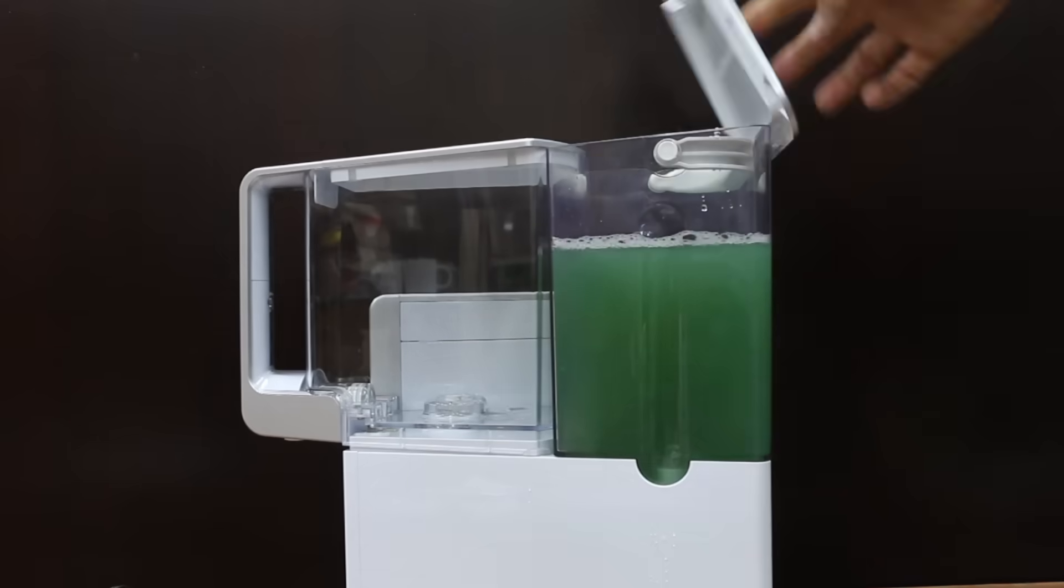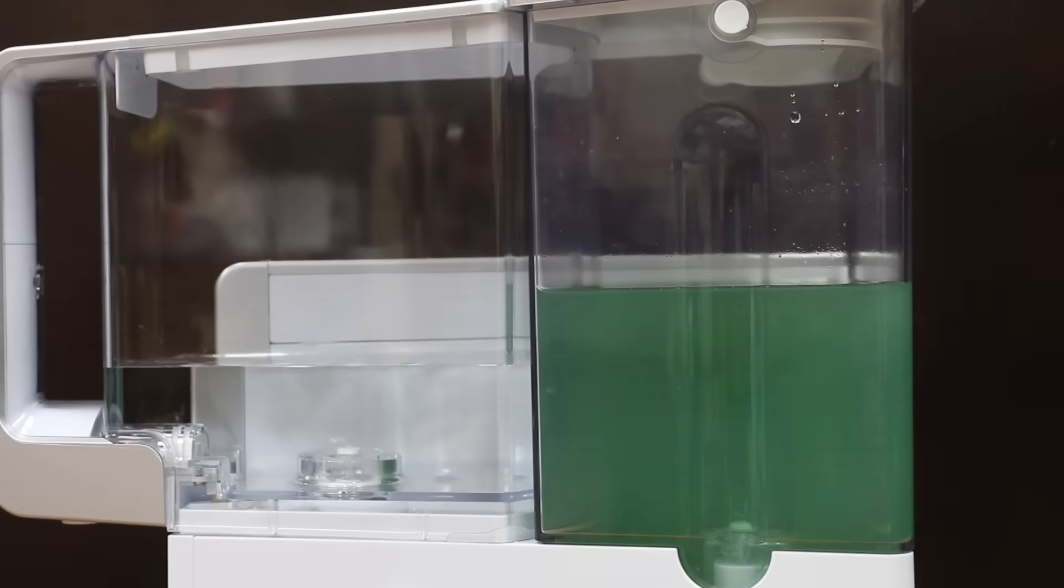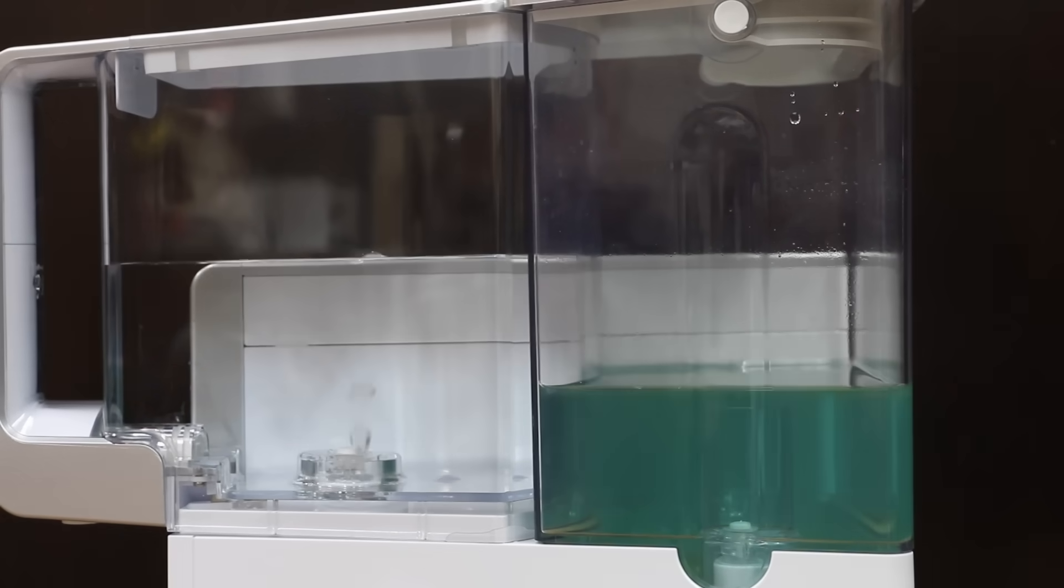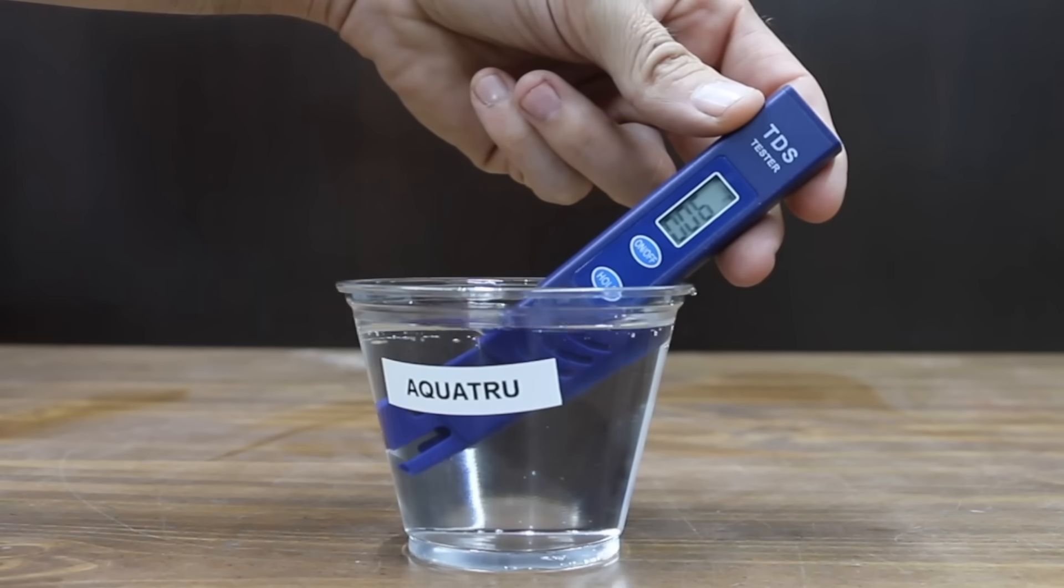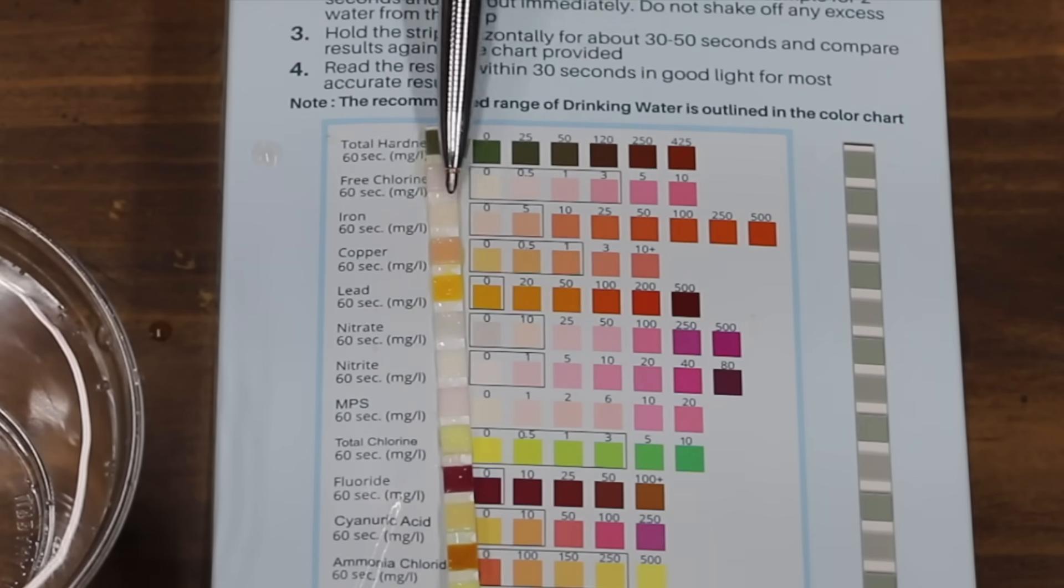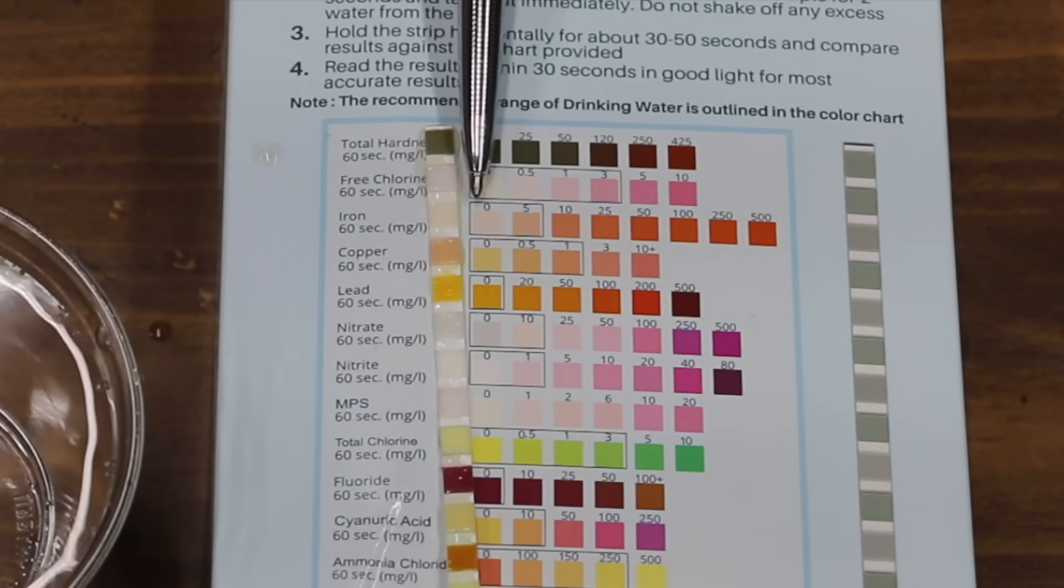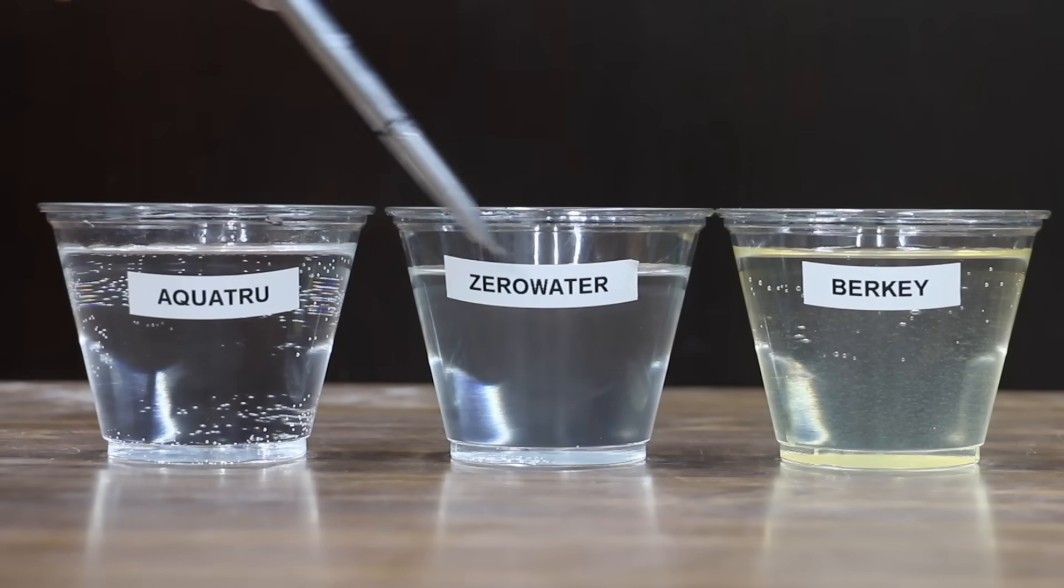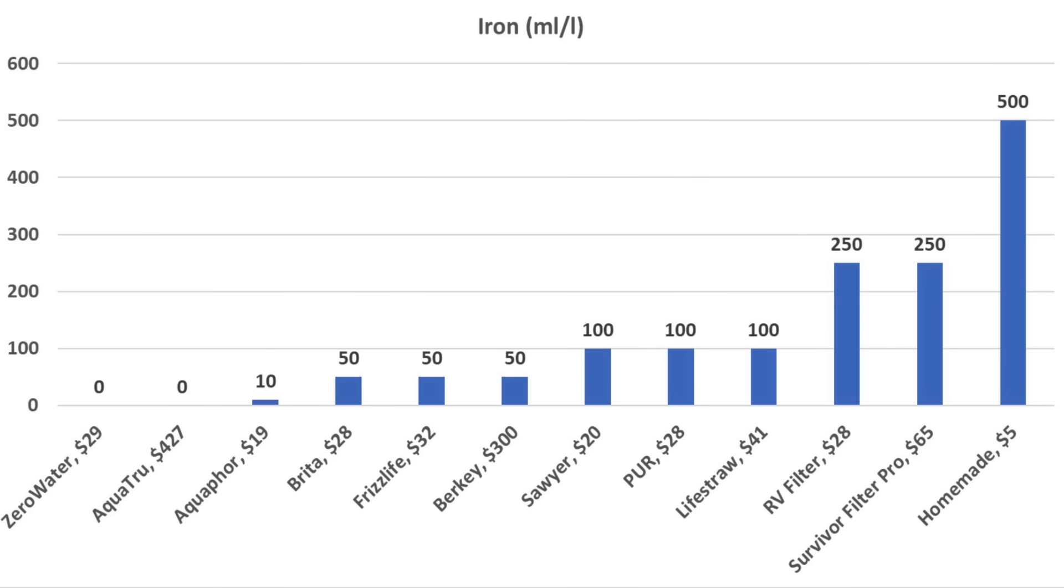And the AquaTrue needed right at 8 minutes to filter the water, and it came out looking crystal clear. After a little bit more use, the AquaTrue filters are doing an even better job at removing the dissolved solids. 6 parts per million. The test strip is showing that the AquaTrue did a great job at removing the iron from the water. In the test for removing ferrous sulfate from water, AquaTrue and Zero Water came out on top at 0 milligrams per liter. Aquaphor also did very well at 10. Brita, Frizz Life, and Berkey, 50 milligrams per liter.